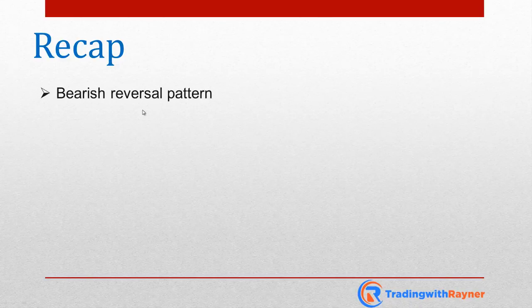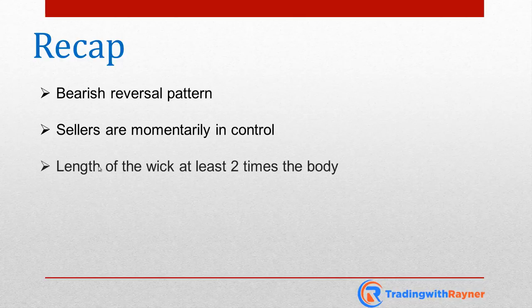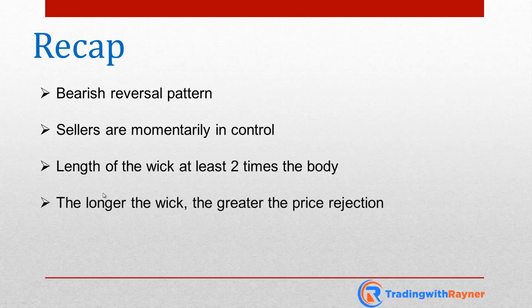Let's do a quick recap. A shooting star is a bearish reversal pattern because it tells you that momentarily the sellers are in control. It doesn't matter whether it happens in an uptrend or downtrend — individually, it is a bearish reversal pattern, telling you that the sellers are momentarily in control. The length of the wick should be at least two times the body, and the longer the wick, the greater the price rejection.